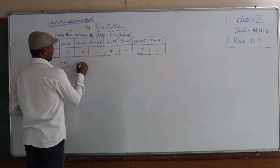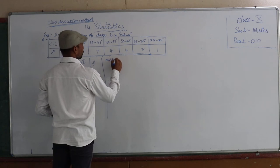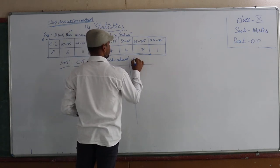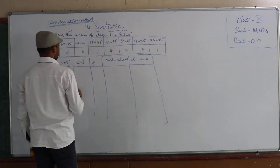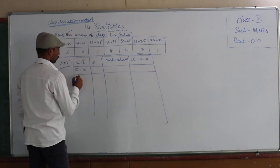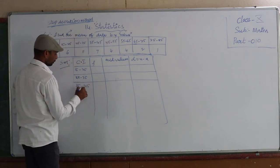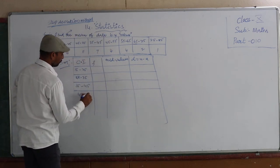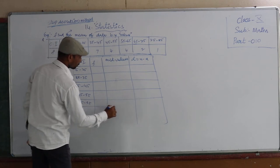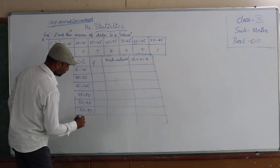See here carefully. First we have class intervals, then frequency. Then we have mid values. Then deviations d, X minus A. Then up to here it's the same. Let me write the intervals: 15 to 25, 25 to 35, 35 to 45, 45 to 55, 55 to 65, 65 to 75, 75 to 85.